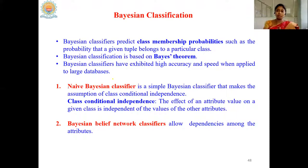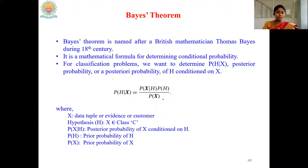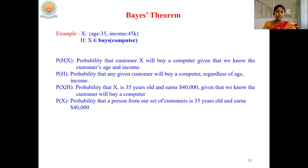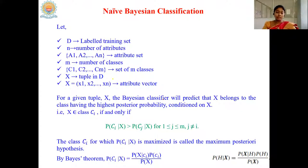So here, we have two classifiers: Naïve Bayes and Bayesian belief networks. Here is the formula for calculating the posterior probability of a class given the tuple from Bayes' theorem, and the same we applied in our Naïve Bayes classifier. Naïve Bayes assumes class conditional independence. What is the condition to assign a particular tuple to a particular class in the Naïve Bayes classifier?